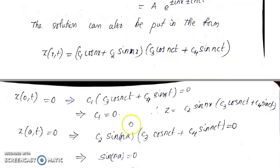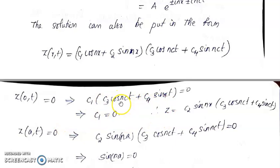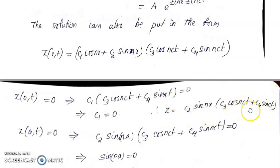Applying the first boundary condition z(0,t) = 0: substituting x = 0 gives c₁·(c₃cos(nct) + c₄sin(nct)) = 0. The second factor cannot be zero, otherwise the entire solution is zero and we need a non-trivial solution. Therefore c₁ = 0, and the solution reduces to c₂sin(nx)·(c₃cos(nct) + c₄sin(nct)).